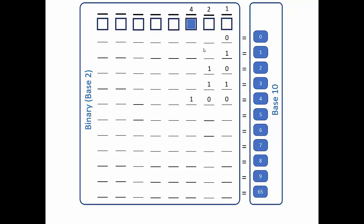Now that you've had the opportunity to work with your shoulder buddy, I'm going to go through the answers. Starting with 5: I need 4 and what other value to get to 5? 4 and 1. So the 4 is on, the 2 is off, and the 1 is on. 4 plus 1 gives me 5. So 1 0 1 is equal to 5 in binary.